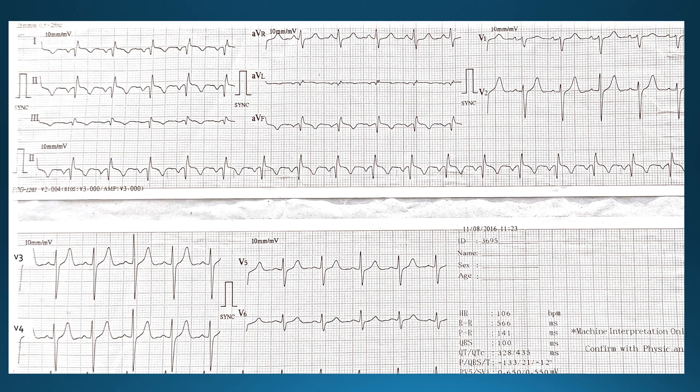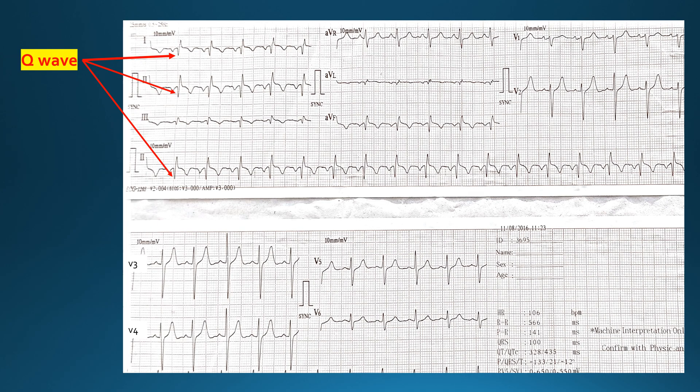The ECG showed the following features. Now let's discuss these. First of all, we can see that the most important finding is the Q waves. Whenever Q waves are present, one should be alarmed about pathologies. These Q waves are present in the limb leads I, II, III, and aVF, and these are marked in the figure.